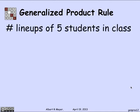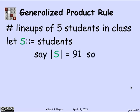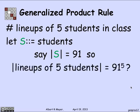Suppose I wanted to count the number of lineups of five students in the class. So if I let S be the number of students, and let's say for the afternoon session S is 91, then the number of lineups of five students, if I use the ordinary product rule, I would get, I'm talking about S to the fifth, that is sequences of length five of elements of S.